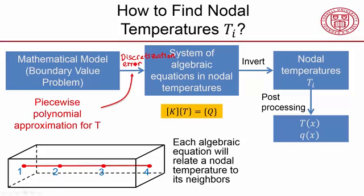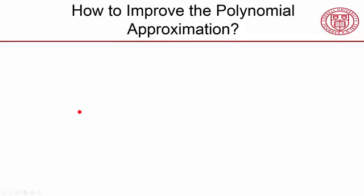And we can reduce the discretization error by improving our piecewise polynomial approximation. So how do we improve the polynomial approximation?